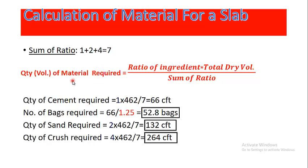To get the quantity of each material, we use the formula: ratio of ingredient multiplied by total dry volume, divided by sum of ratio. For cement, that is 1 × 462 ÷ 7, which gives us 66 cubic feet. This is the quantity of cement required for casting the slab.